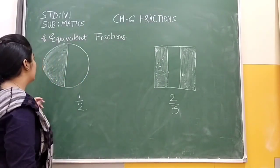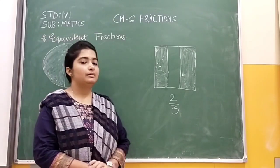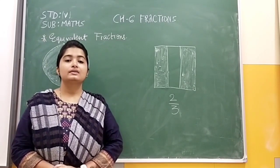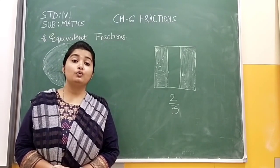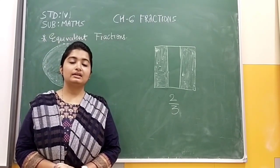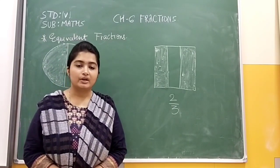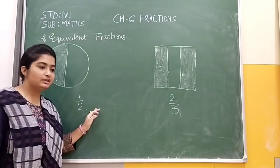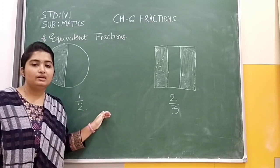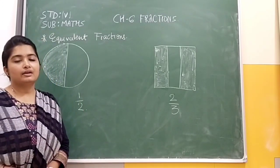Now let us discuss what is equivalent fraction. If I am multiplying my fraction — up or down — I will multiply the same number by any number. One thing we have to remember: the same number must be multiplied both on top and bottom. That is called our equivalent fraction.